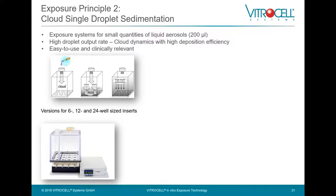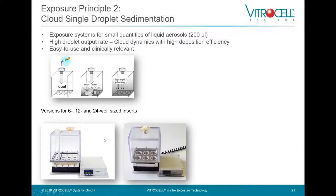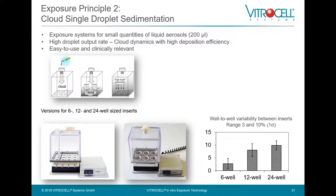Cloud systems are available in various versions for six, 12, and 24 well-sized inserts. Here you see a typical Cloud 12 and a Cloud 6 for six well-sized inserts. The graph shows a nice, low well-to-well variability: in the six-well format it's about three percent, on the 12-well it's about eight percent, and on the 24-well format it is about ten percent — which is a very good value for in vitro experiments.